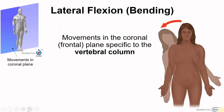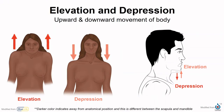Beyond these movements, there are many more that are named. Lateral bending, or lateral flexion, is specific to the vertebral column — the column bends toward the side in the coronal or frontal plane. The scapula and mandible can both elevate (move upward) or depress (move downward). In the diagrams, darker colored arrows refer to movement away from anatomical position and lighter arrows indicate movement toward anatomical position.